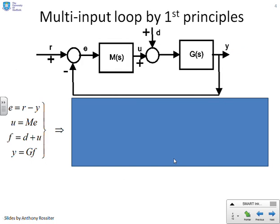So let's look at this simple loop here. You can see it's got two loop inputs. I'll circle them for you. We've got a signal R coming into a summing junction there and a signal D coming into a summing junction there. And what we might want to know is what are the internal signals E, U, and Y and how do these depend on the loop inputs R and D?